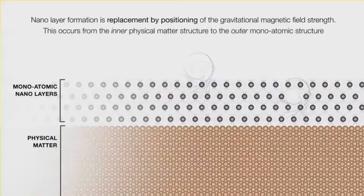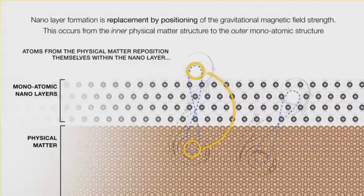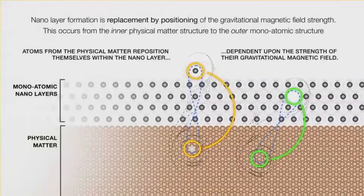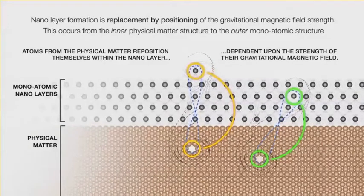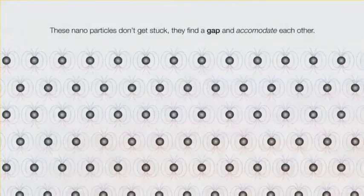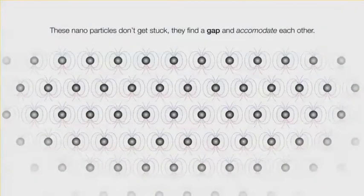This occurs from the inner physical matter structure to the outer mono-atomic structure. Atoms from the physical matter reposition themselves within the nano-layers, dependent upon the strength of the gravitational-magnetic field. They just find their position depending on their strength. These nano-particles don't get stuck — they find a gap and accommodate each other.